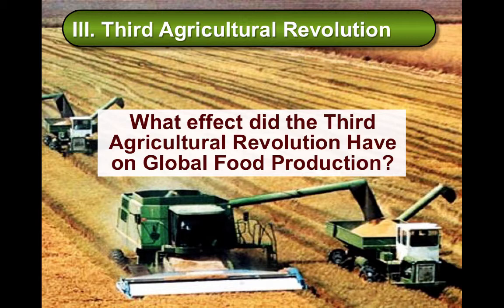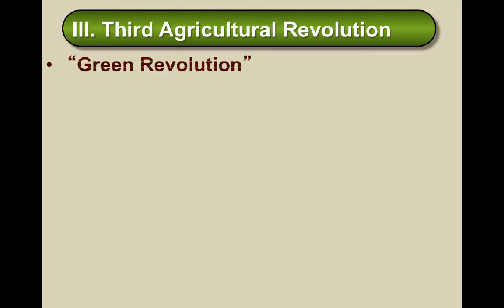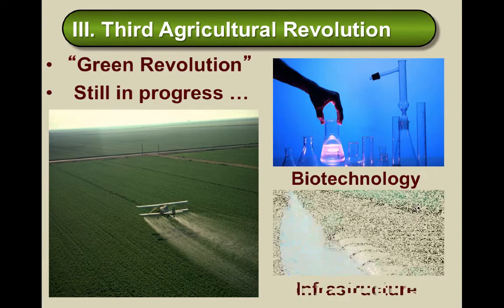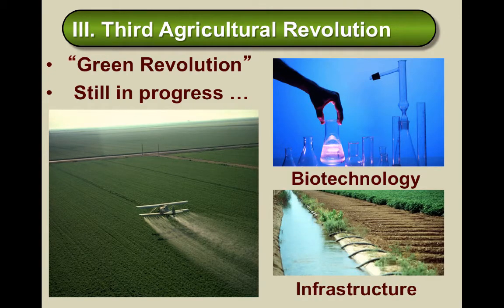The third agricultural revolution, which is often synonymous with the green revolution, began as a result of a series of research, development, and technology transfer initiatives beginning between the 1940s and 1960s. In many respects it is still in progress and has mainly focused around biotechnology and the development of modern infrastructure such as irrigation canals.